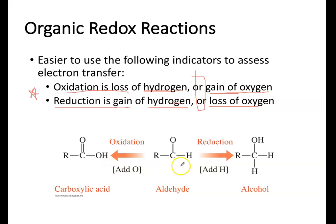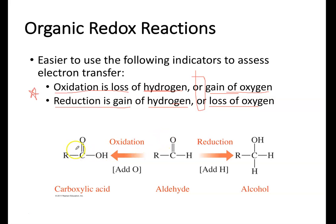Here's an example using functional groups. An aldehyde group has a carbonyl — carbon double-bonded to oxygen — and single-bonded to a hydrogen. If we reduce this aldehyde, reduction is gain of hydrogen: we go from one hydrogen to three hydrogens, and the aldehyde functional group becomes an alcohol (OH group). If we oxidize the aldehyde, we either add oxygen or lose hydrogen — in this case we go from one oxygen to two oxygens, which is the sign of oxidation, and we get a different functional group called a carboxylic acid: C double-bonded to O and single-bonded to OH.